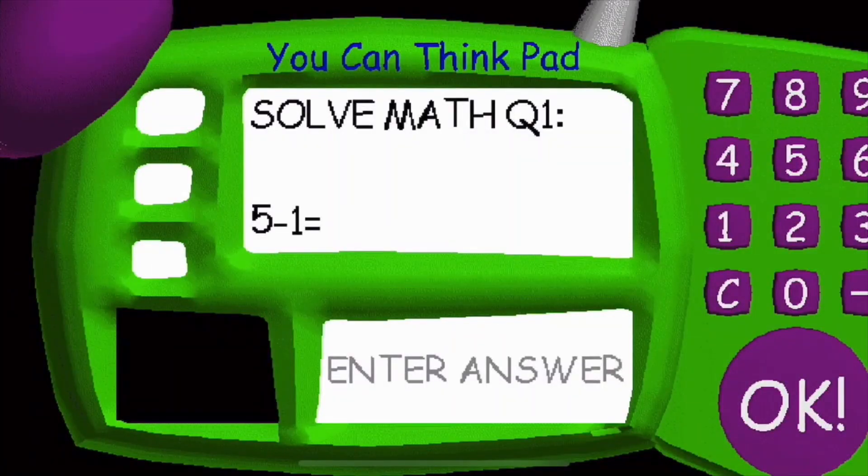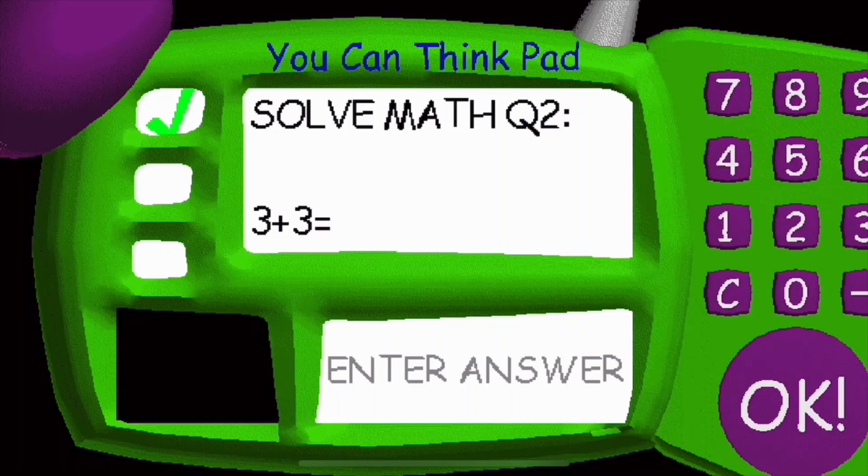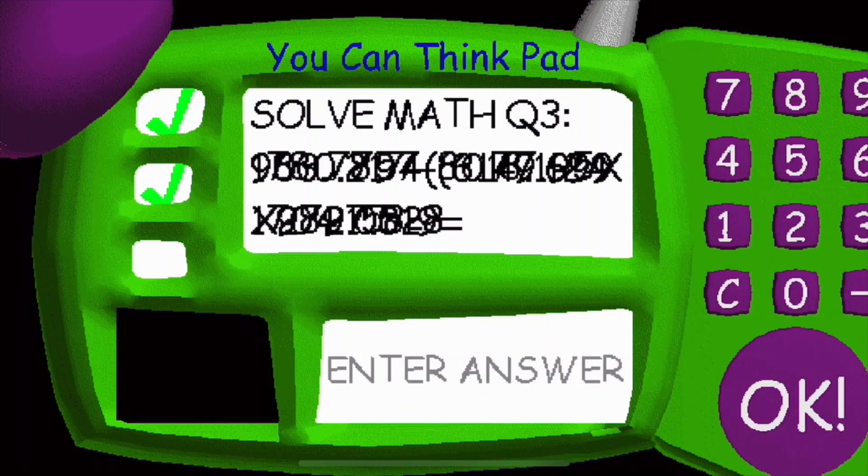If you find scissors, you get to cut the jump rope. Okay, 5 minus 1 is 4. Thank you.